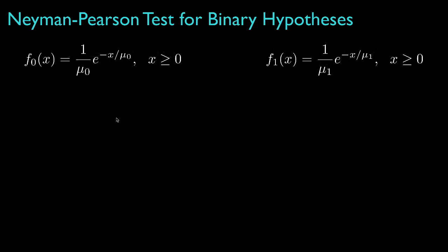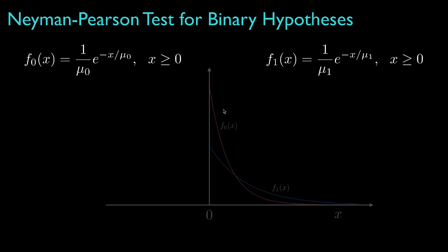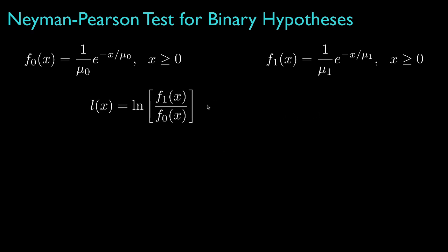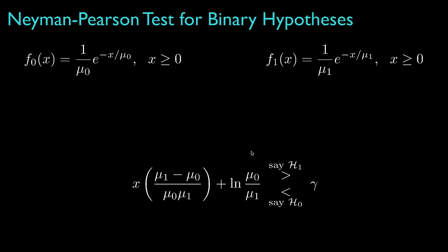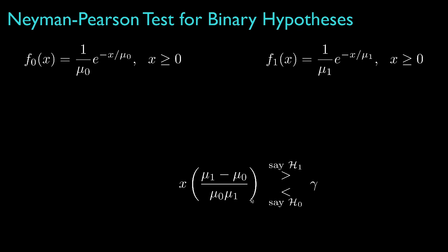As an example, let's look at a situation where the observation is an exponential random variable under each hypothesis, but with means mu_0 for hypothesis 0 and mu_1 for hypothesis 1. Those densities might look like this for the situation when mu_1 is greater than mu_0. Because the data appear in the exponent of the densities, the log likelihood ratio gives a more compact result for the decision rule. This has two terms: one involving the data and one that does not. The constant term — the logarithm of mu_0 over mu_1 — can be subtracted from both sides and absorbed into the threshold variable gamma.